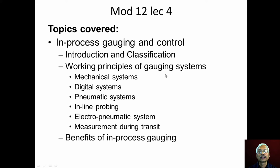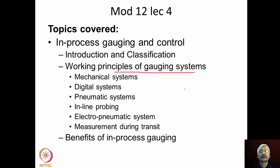Welcome to the lecture series on metrology. We will start module number twelve, lecture number four. In this lecture we will be covering in-process gauging and control, which includes an introduction to in-process gauging, how these systems are classified, and the working principles of various gauging systems including mechanical, digital, pneumatic, inline probing, electro-pneumatic systems, and measurement during turning. Finally, we will discuss the various benefits of in-process gauging.